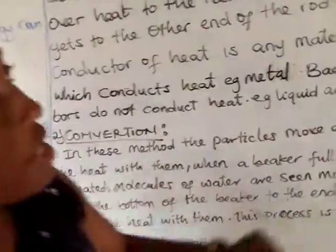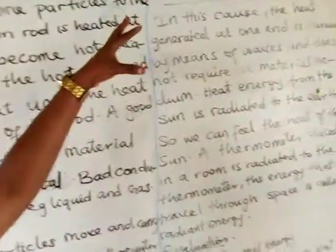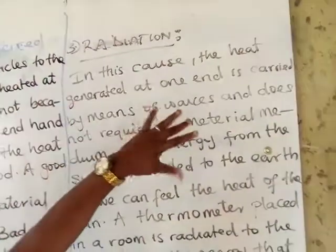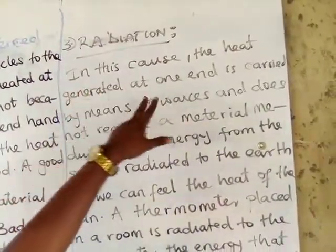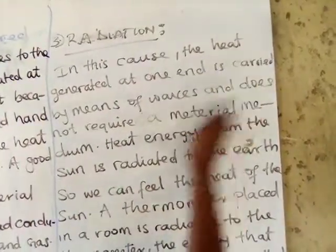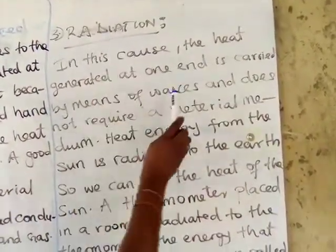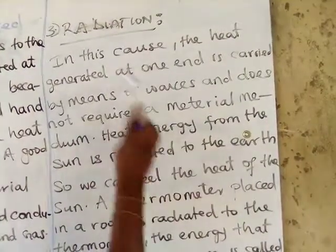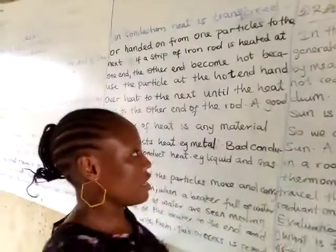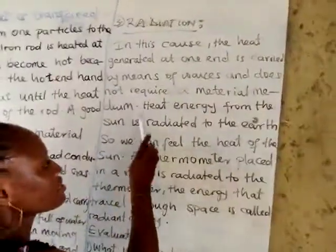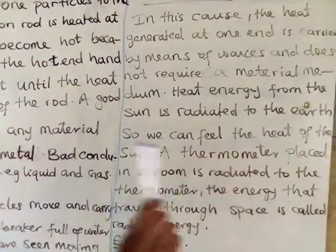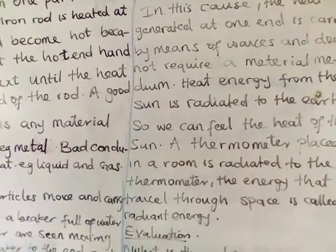Now let's move to the third one, which is radiation. In radiation, the heat is generated at one end and is carried by means of waves and does not require a material medium. For example, energy from the sun is radiated to the earth, so we can feel the heat of the sun on the earth.